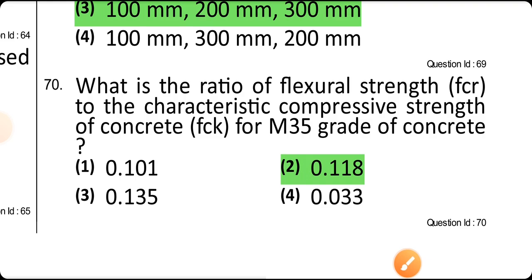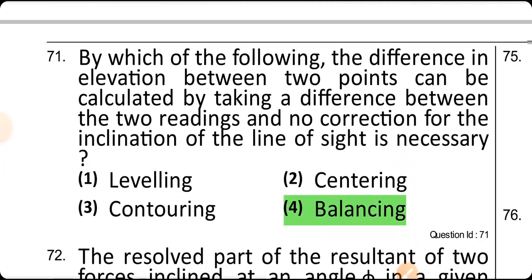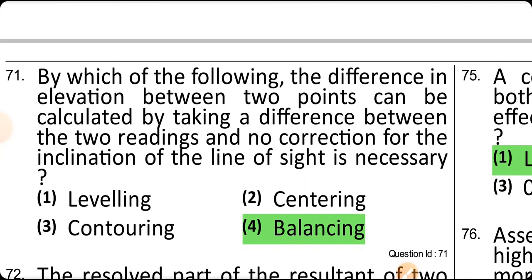What is the ratio of flexural strength to the characteristic compressive strength of concrete? For M35 grade of concrete, it is 0.118. The difference in elevation between two points can be calculated by taking the difference between two readings with no correction for inclination of the line of sight in SRE.